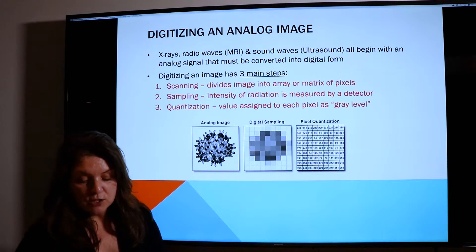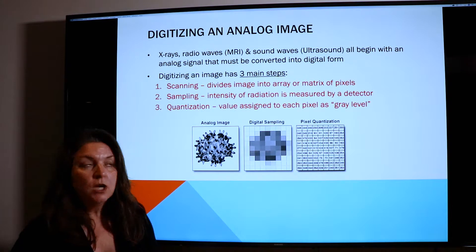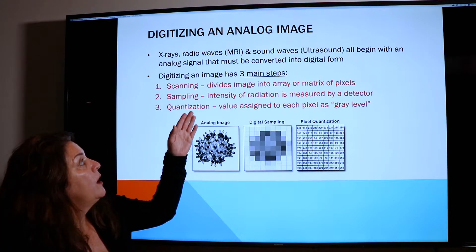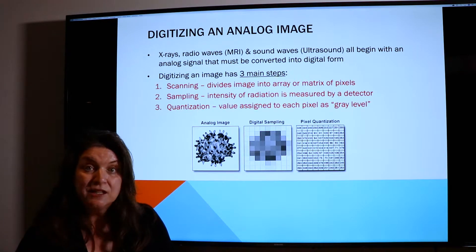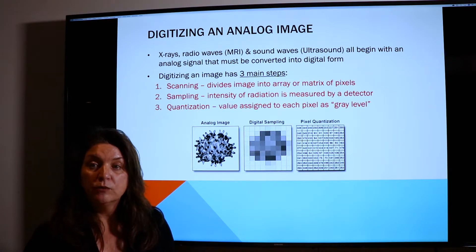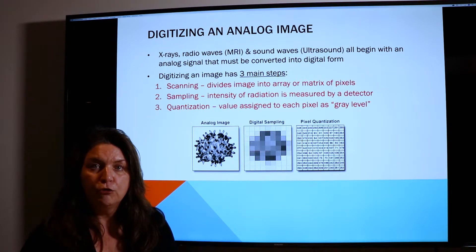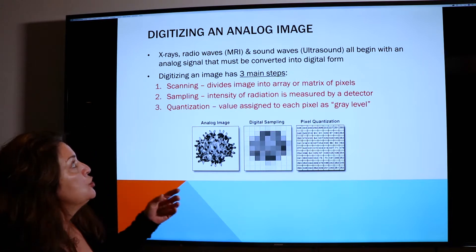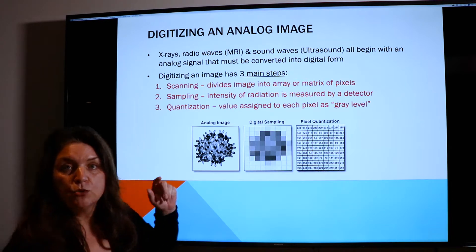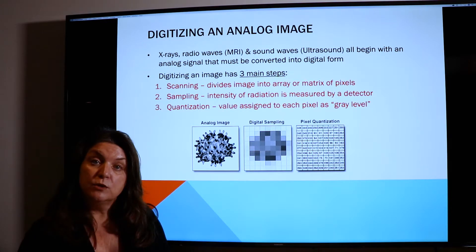The next portion of this lecture is going to talk about digitizing an analog image. In x-ray, radio waves and MRI, and sound waves and ultrasound, all of those signals coming in are in waveform, which means they're in an analog form. In order for us to see that on a computer, that has to be converted to a digital image. There are three main steps that happen in converting that image from an analog signal to a digital signal.